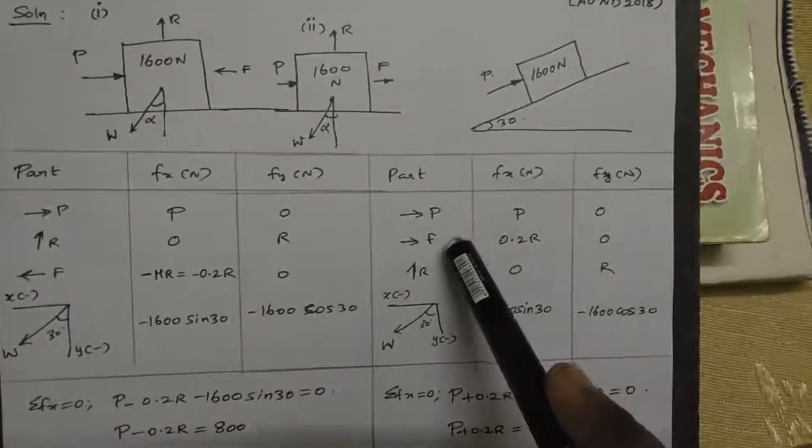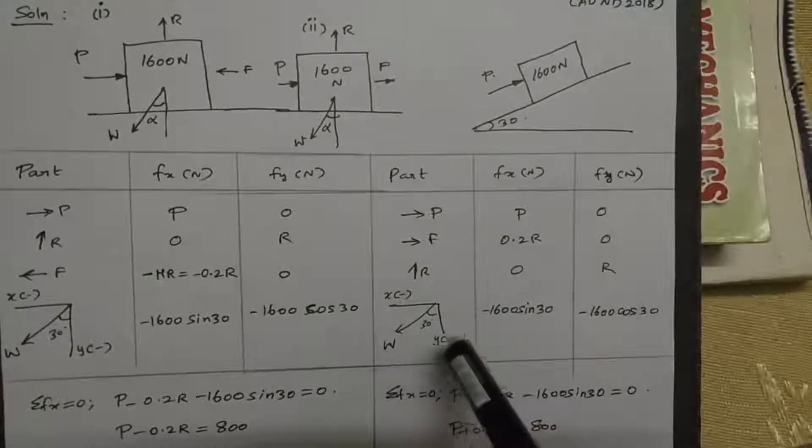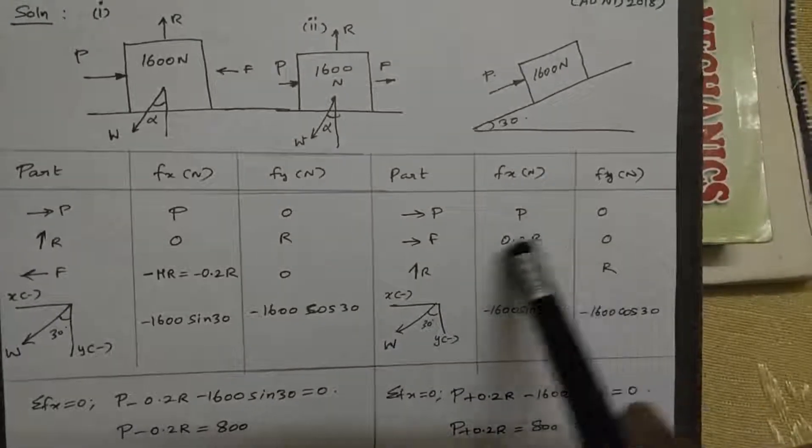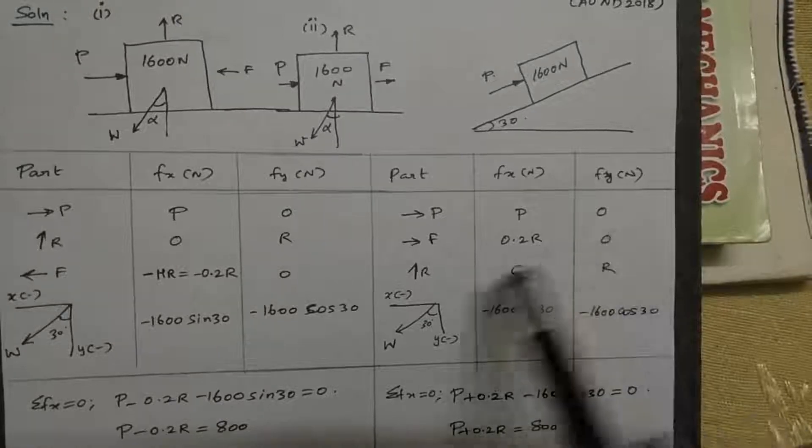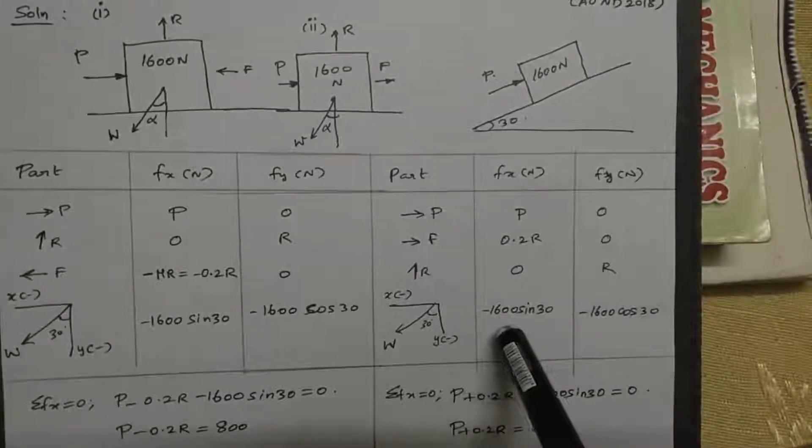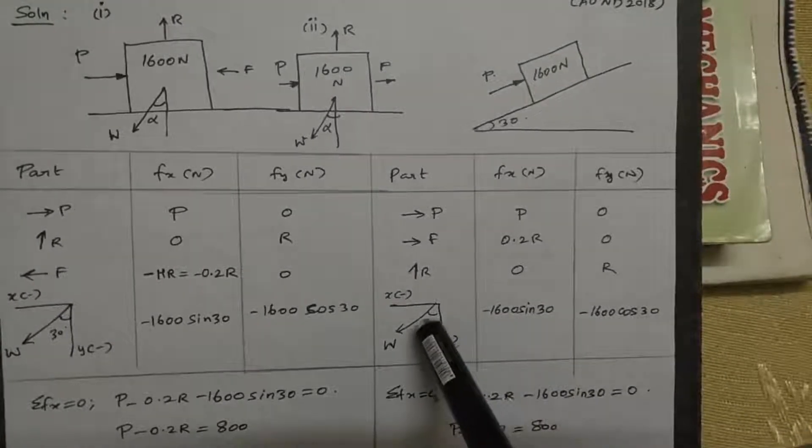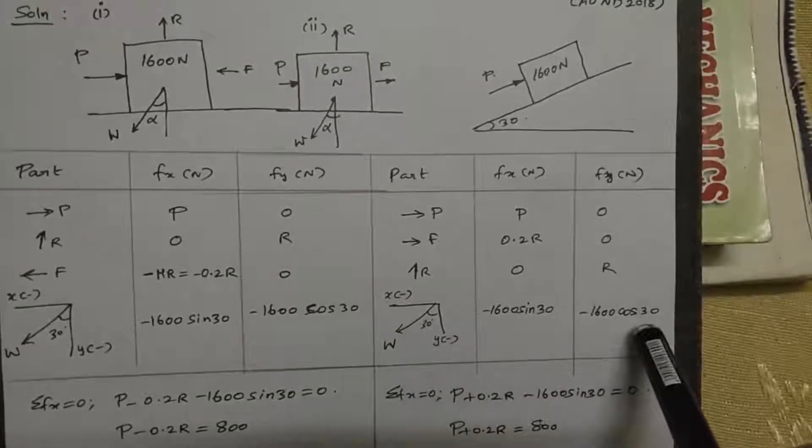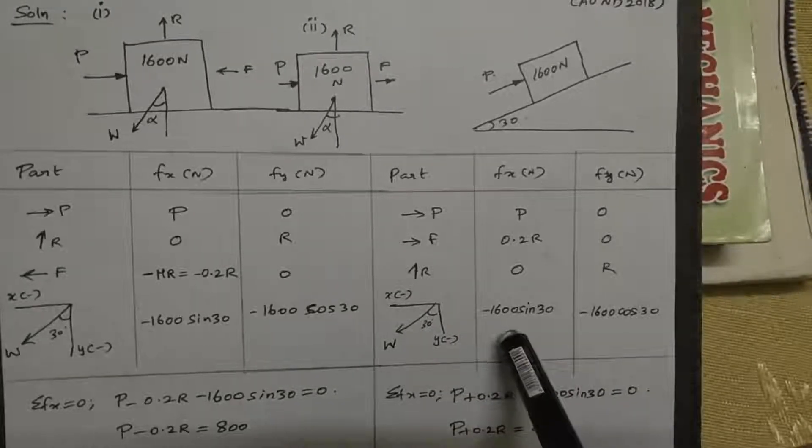For the second case, capital P, capital F, capital R. Capital P is positive, 0.2R, 1600 sin theta is negative. F of x equals capital P plus 0.2R minus 1600 sin theta equal to 0. Likewise, R minus 1600 cos theta equal to 0.